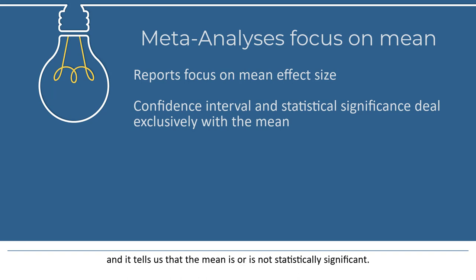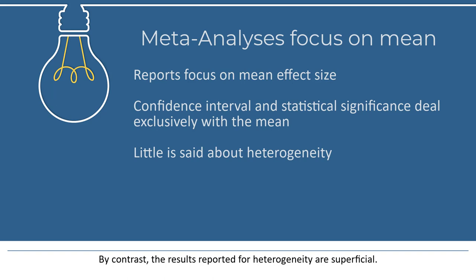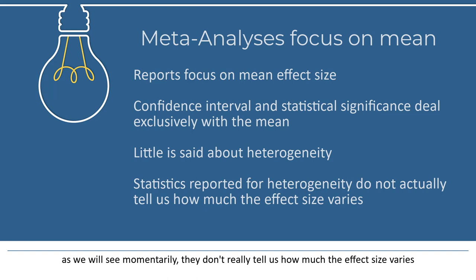By contrast, the results reported for heterogeneity are superficial. The paper usually reports a Q value, I-squared, and Tau squared. These are intended to quantify heterogeneity, but as we will see momentarily, they don't really tell us how much the effect size varies.